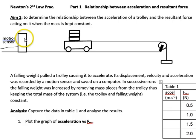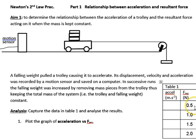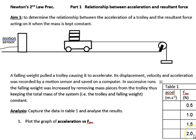A motion sensor detects where it is and calculates its velocity and hence acceleration as time progresses. The first time we have a half a newton weight hanging over the edge. The second time, one, then one and a half, and then two newtons.